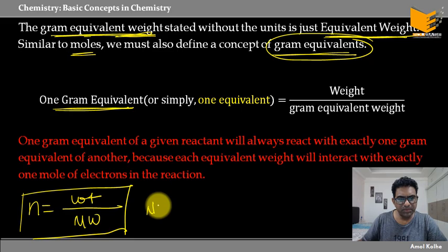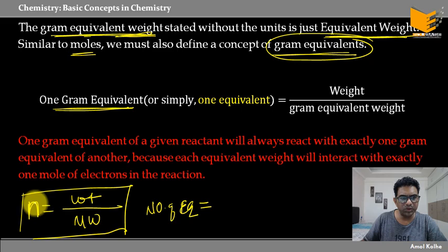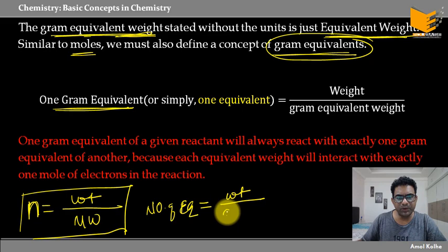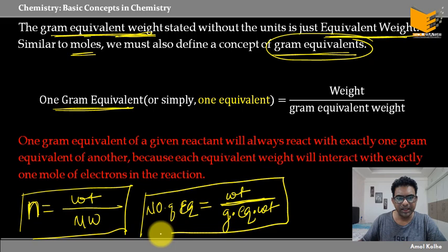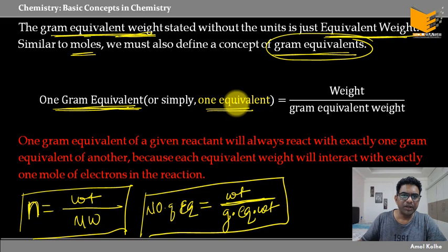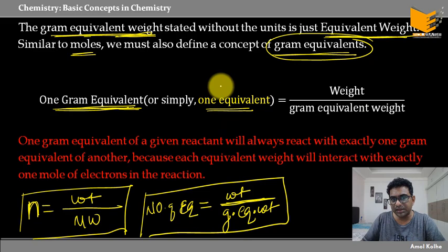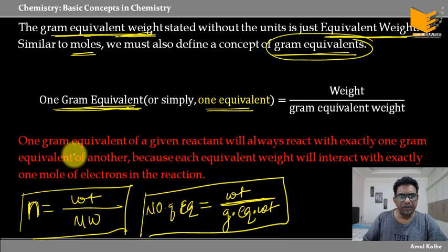अगर weight जो ले रहे हैं वो molar mass नहीं है, तो हमको number of equivalents मिलेगा। If this weight is equal to molar mass, then we get one equivalent. Equivalent की सबसे बड़ी benefit यह है कि अगर मैं 1 gram equivalent weight लेता हूँ किसी एक reactant का, तो that 1 gram equivalent of that species will react exactly with 1 gram equivalent of another species, किसी भी reaction में।